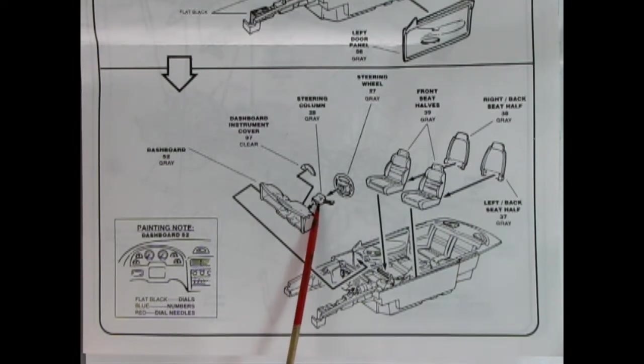There we've got our steering column and our steering wheel and our front bucket seats with the backs going on.